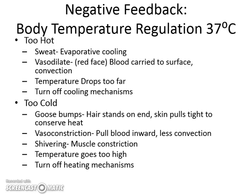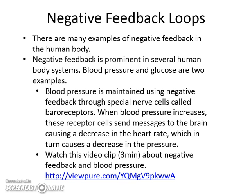The key terms are vasodilate — to get bigger, allowing more surface area for blood vessels to cool off — and vasoconstrict — to get smaller, reducing surface area so your blood can warm up. Normal body temperature is 37 degrees Celsius. Other examples of negative feedback loops are blood pressure and glucose. In blood pressure, we use receptor cells called baroreceptors. When blood pressure rises for whatever reason, the receptor cells send a message to your brain to decrease your heart rate and in turn decrease the pressure in your blood. Here's a three-minute video clip that will go into blood pressure — please watch it.